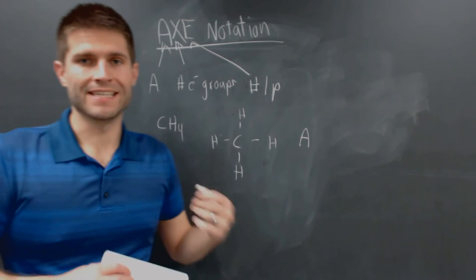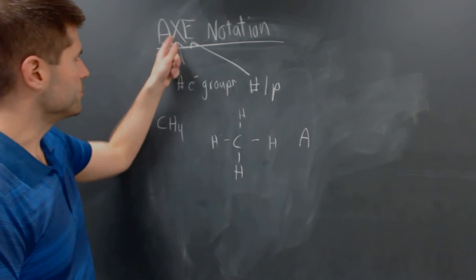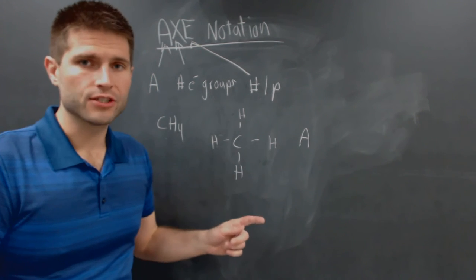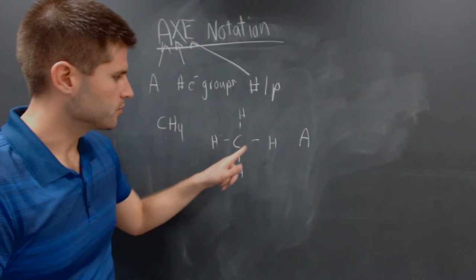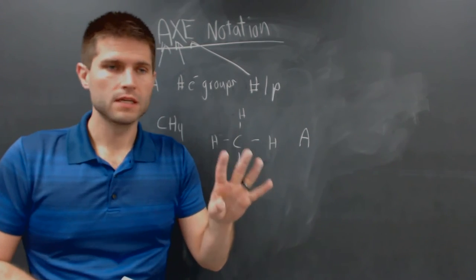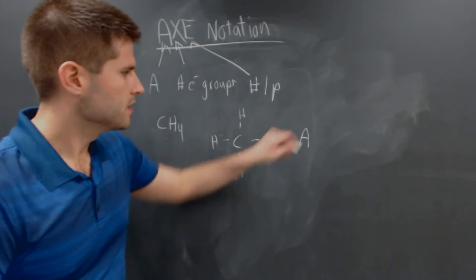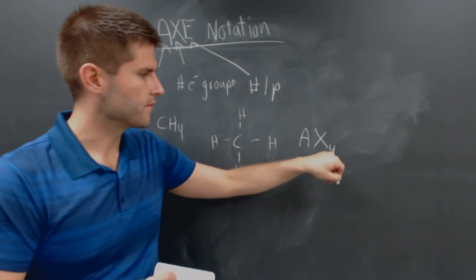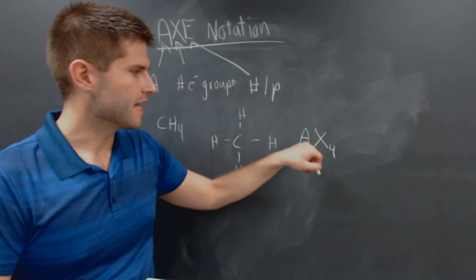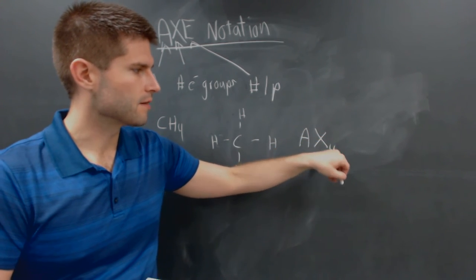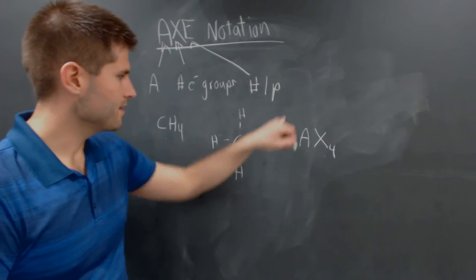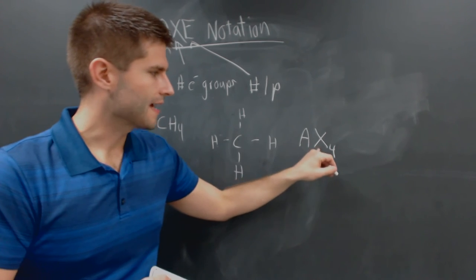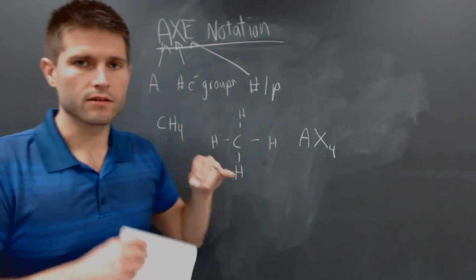The A is always just going to be written as an A. Now we go to the X. The X tells you the number of electron groups surrounding the central atom. All we have to do is count. One, two, three, four. There are four electron groups that are surrounding the central atom. So the next letter is an X, and we write a subscript. So unlike the electron configuration where our numbers are superscripts, in the AXE notation, the numbers are going to be subscripts. So we have an A. That just tells you we're talking about this system, the AXE notation. X, it tells you you have four bonding groups.